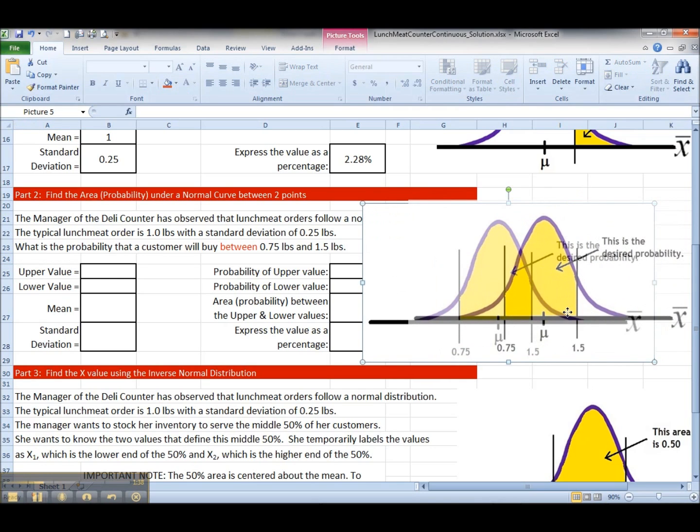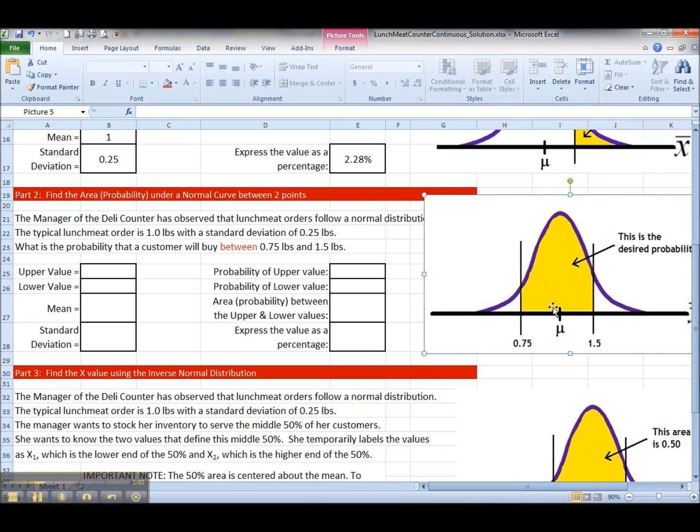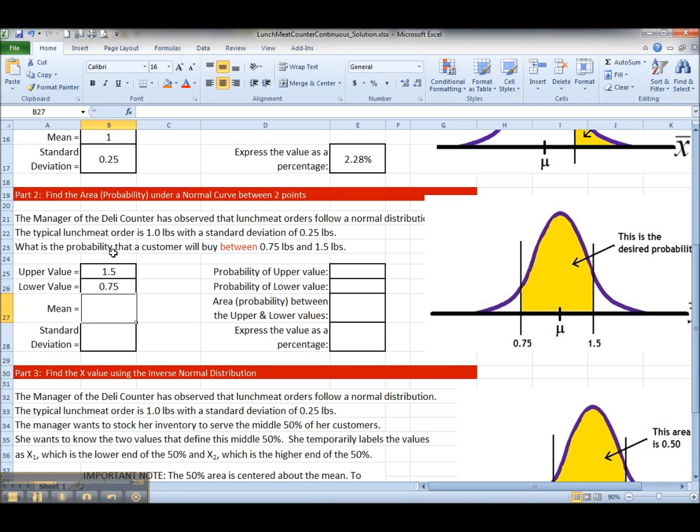This is our x-axis and we've labeled our points. Now the first thing that we need to do is enter in, we're prompted here, the upper value. So I'm going to click in cell B25, my upper value is 1.5, press enter. Now I'm asked to enter the lower value, well that was 0.75 pounds. I'm asked again to enter the mean, and in this problem it's the same, 1 pound, and I'm asked to enter the standard deviation, 0.25.